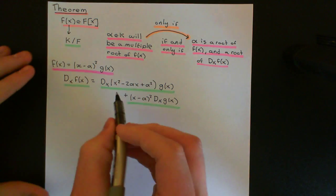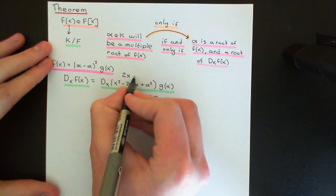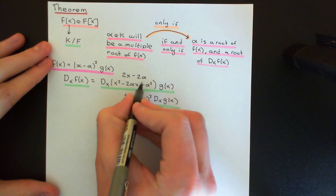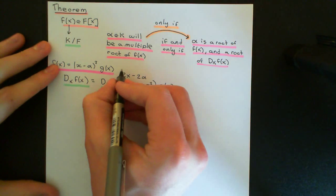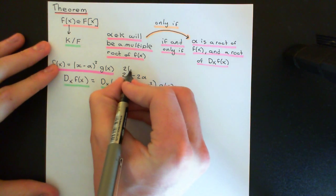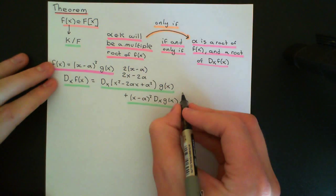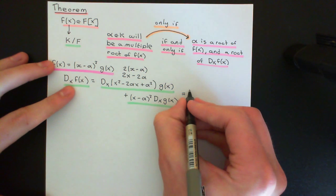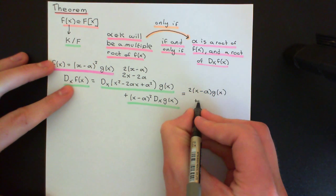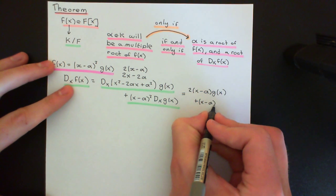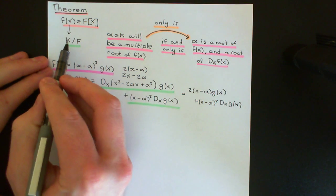Applying the derivative definition to x² − 2αx + α² gives 2x − 2α, which factors as 2(x − alpha). So the derivative of f(x) becomes 2(x − alpha)·g(x) + (x − alpha)²·g'(x). This computation is all being done in the splitting field K.